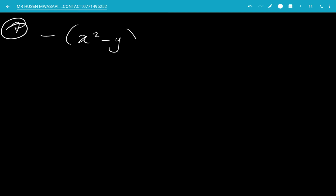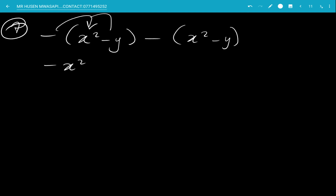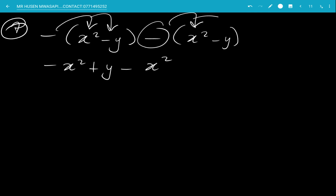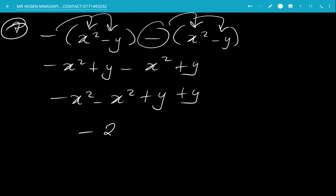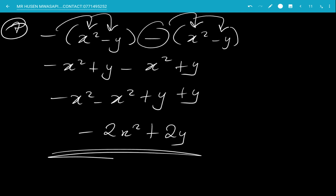Example 7 — Simplify: −x²(−y) − x²(−y). The first minus x squared multiplies negative y to get positive xy, and again negative x squared multiplies negative y to get positive xy. Collecting like terms: xy plus xy gives 2xy, and the minus x squared terms give minus 2x squared. Final answer: −2x² + 2y.